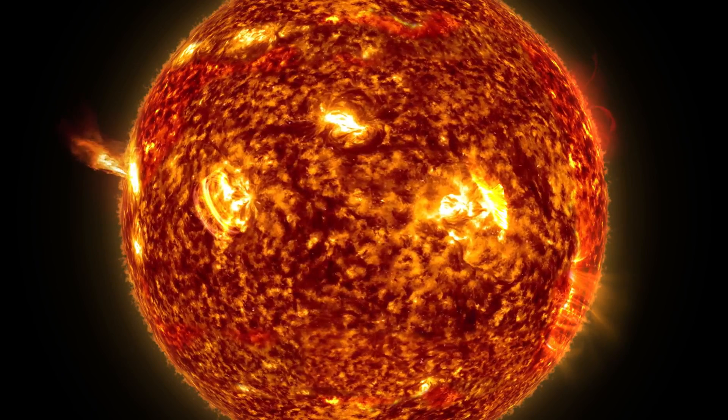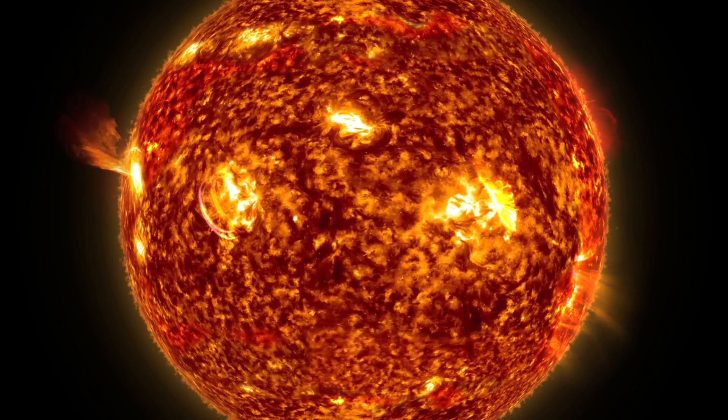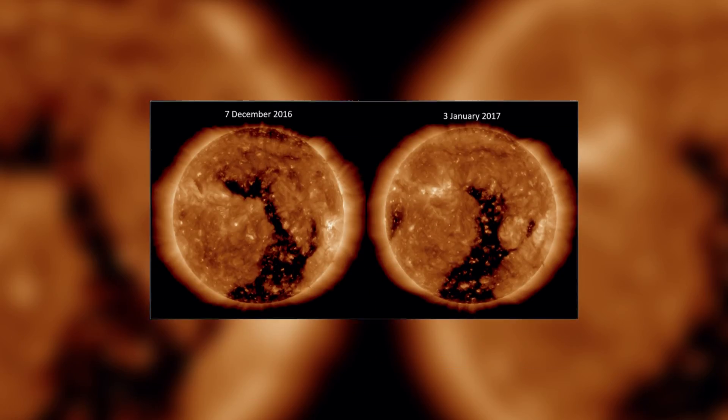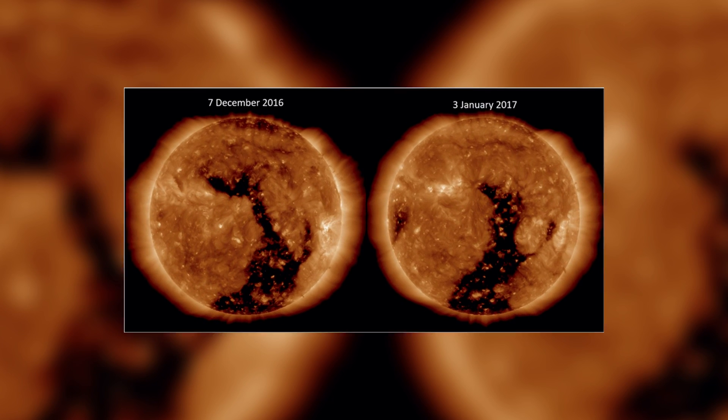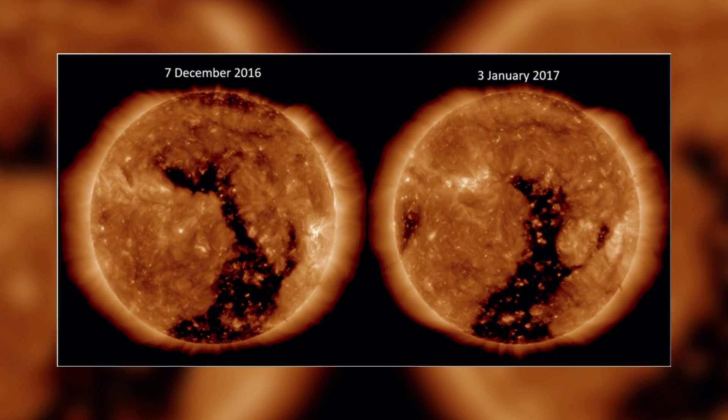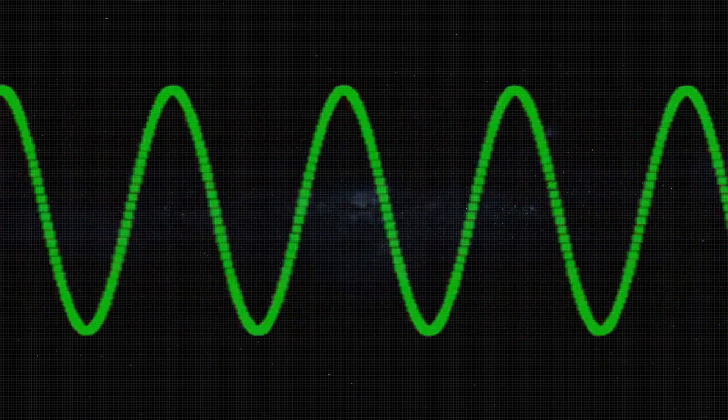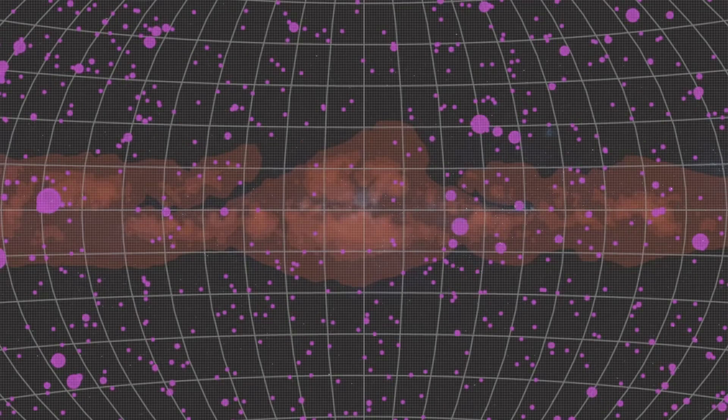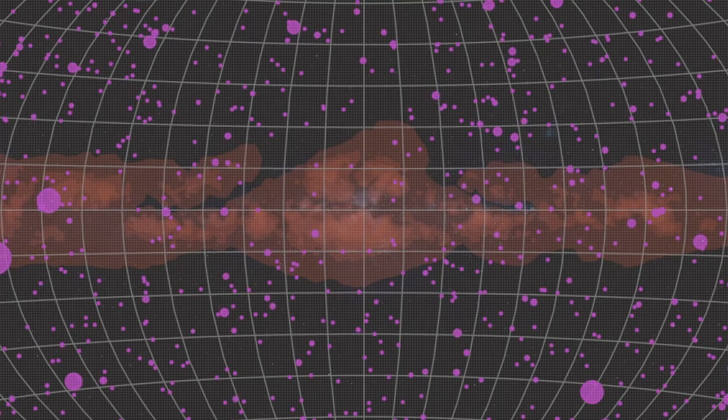At the same time, a medium-sized but perfectly equatorial coronal hole has opened on the sun's surface. Coronal holes are regions where magnetic field lines extend outward, allowing streams of high-speed solar winds to escape. As these streams travel toward Earth, they can compress the planet's magnetic field and produce geomagnetic storms.